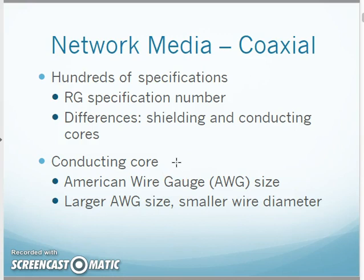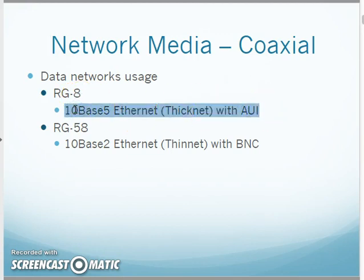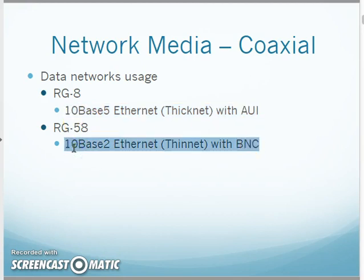There are different types of coax, specified by RG number. The differences have to do with size, connector size, and shielding. The connector size relates to American Wire Gauge. Looking at different types: RG-8 and RG-58 are from the early days of networking. RG-8 was used for thicknet 10-Base-5 Ethernet networks, and RG-58 was used for the later thinner 10-Base-2 thinnet networks using BNC connections.